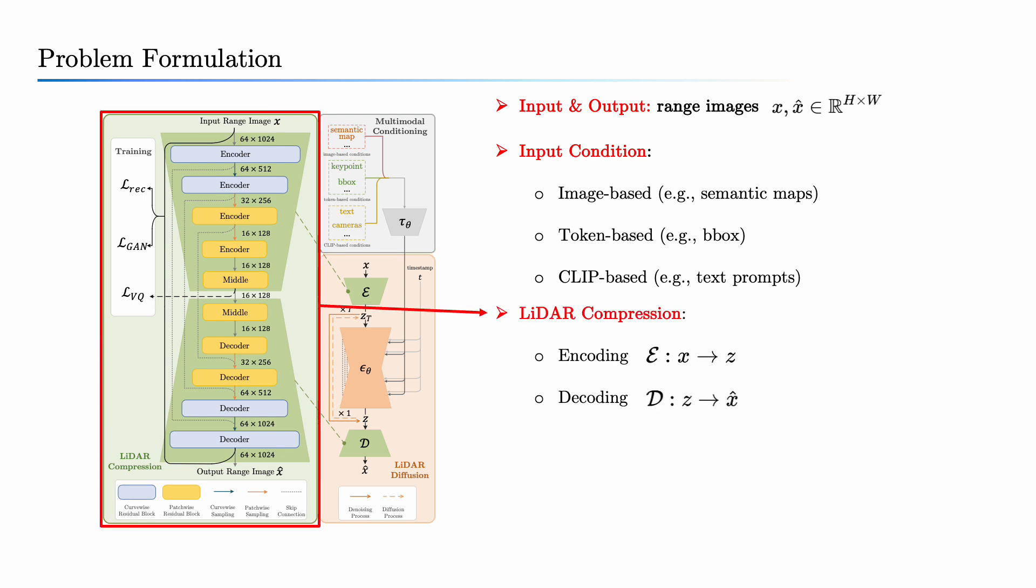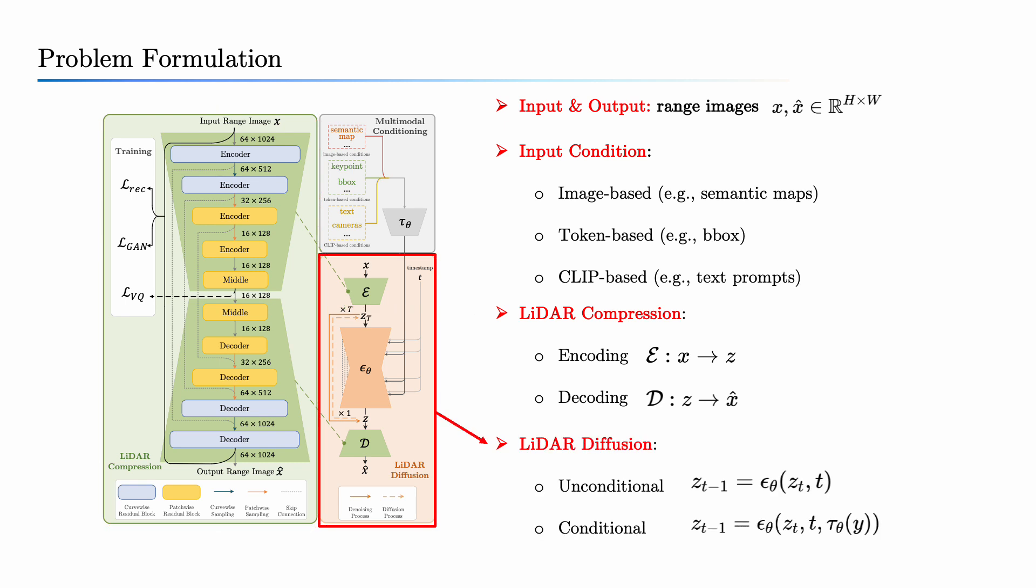The pipeline is divided into two parts: LiDAR compression and LiDAR diffusion. In the compression stage, an autoencoder processes range images into latent codes. In the diffusion stage, diffusion models comprehend the compressed code distribution through a progressive denoising process.